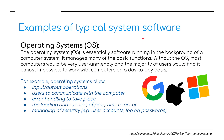Examples of typical system software — we'll start with the operating system. An operating system, or OS, is essentially software running in the background of a computer system. It's usually the first thing that's installed on a computer and manages many of the basic functions. Without the operating system, most computers would be very user-unfriendly and the majority of users would find it almost impossible to work with computers on a day-to-day basis. The operating system controls input and output operations, allows the user to communicate with the computer, handles errors, manages the loading and running of programs, and manages security through user accounts and passwords.